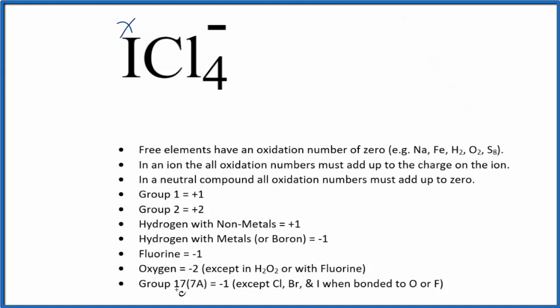Chlorine is in group 17, so it's normally negative one. We're going to call the chlorine negative one, and that's each one of these four chlorines. The whole thing, all these oxidation numbers, will add up to minus one.